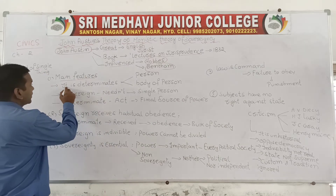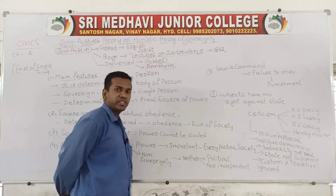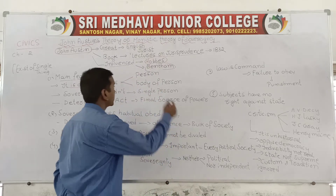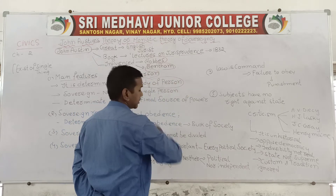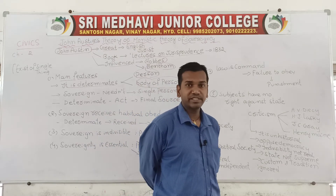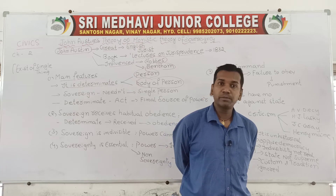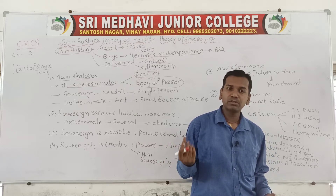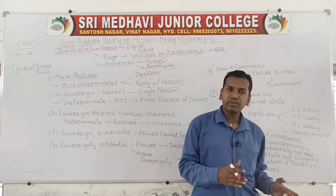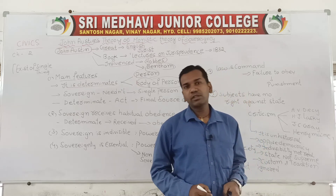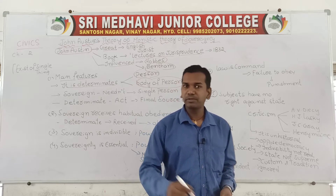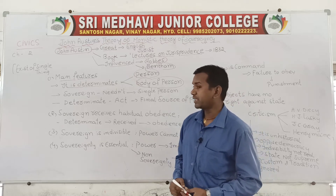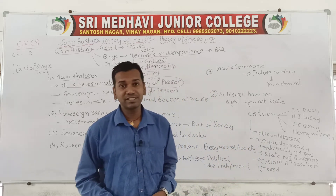First feature: sovereignty is determinate — it should be fixed. Either a person or a body of persons, that sovereignty should be completely fixed. We already know that sovereignty lies in the state. When the government is appointed, all sovereignty is vested under the control of the government, and government exercises power on behalf of the state, enacting rules, regulations, and formulating policies on behalf of the state.